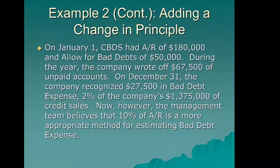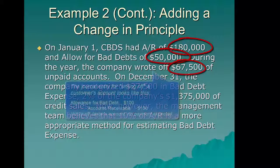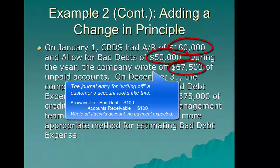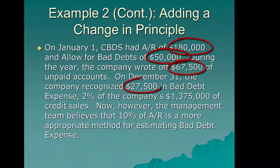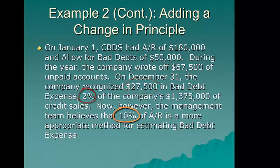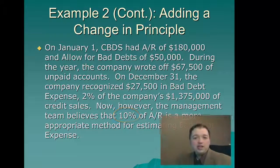Here's our example. They had accounts receivable of $108,000 and an allowance for bad debts of $50,000. They wrote off $67,500 in unpaid accounts — those accounts receivable and the allowance set aside were written down. On December 31st, they had recognized $27,500 in bad debt expense, which was 2% of their credit sales. Now the company thinks credit sales is not a good estimate, so they're going to change to 10% of accounts receivable as their estimate. Instead of total credit sales, it's the people that still owe them money when the year ends. Is this a change in principle? It is.